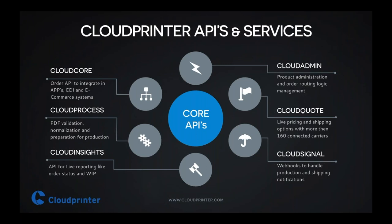The last one we have on the chart here today is Cloud Signal. This is the service that makes sure that signals from the production are received correctly in the Cloud Printer process. If you are requesting signals on status and orders, it sends those signals to you in the format and to the endpoint that you have configured.